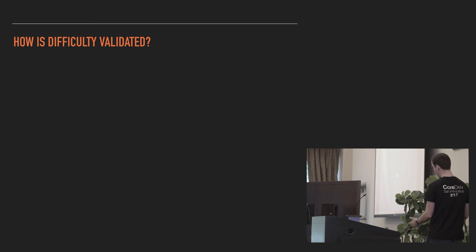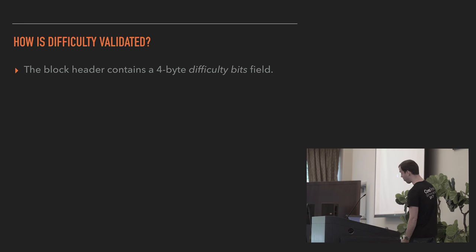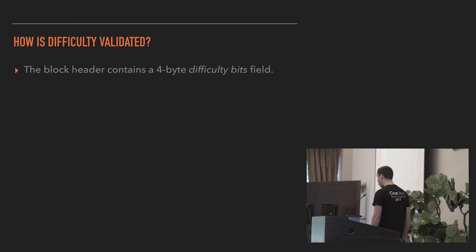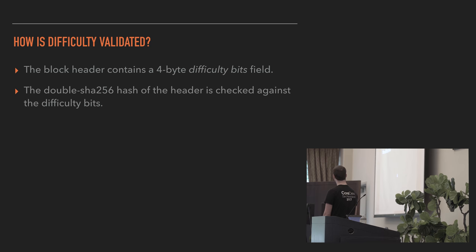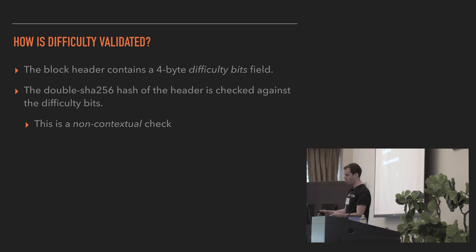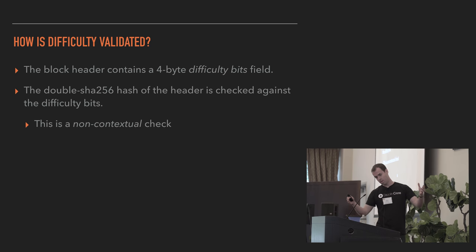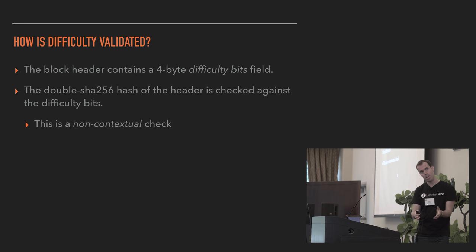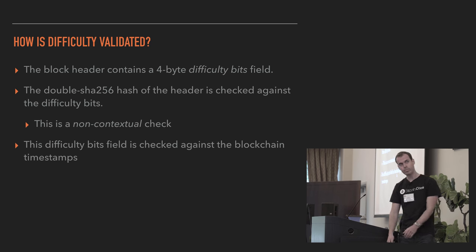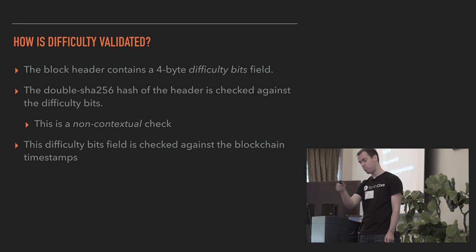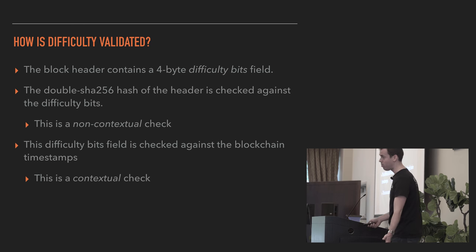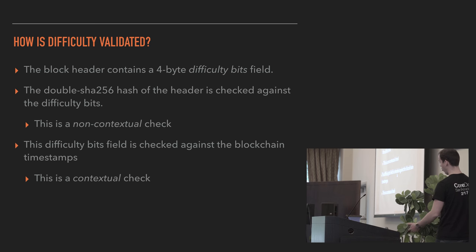The block header contains a 4-byte field called the bits field. The double-SHA hash of the block is compared with that bits field — that's called a non-contextual check because it's looking at data inside the block. That difficulty bits field is also compared against prior blocks in the chain — that's called a contextual check, because depending on where the block is in the chain, it could be valid or invalid. Other things in Bitcoin also have this indirect checking, for example lock time when used in a script.